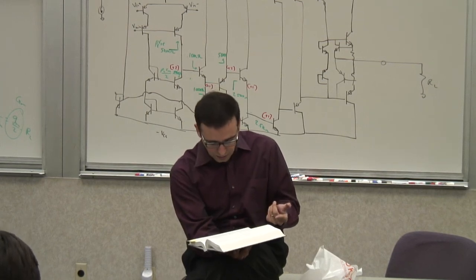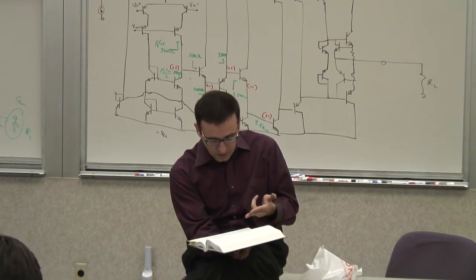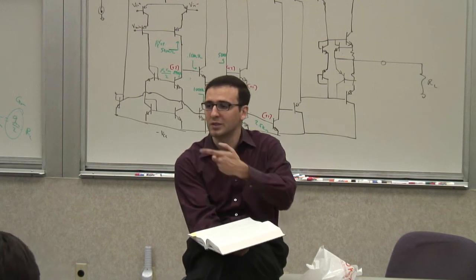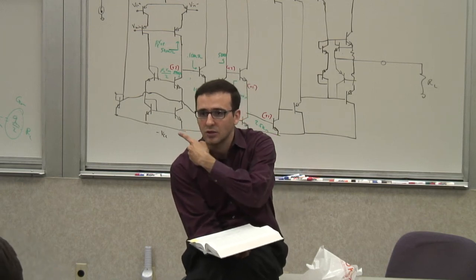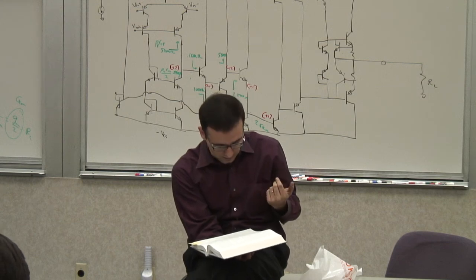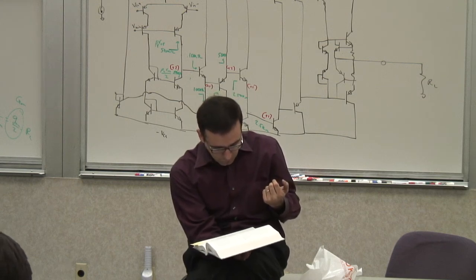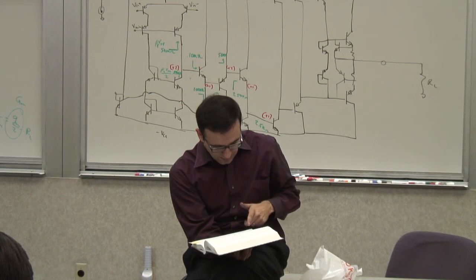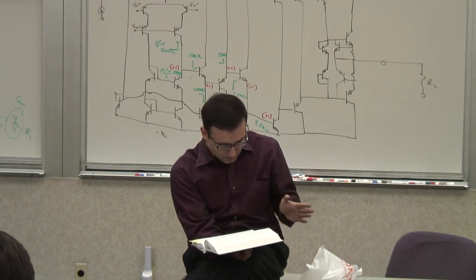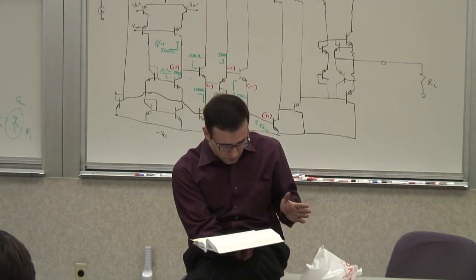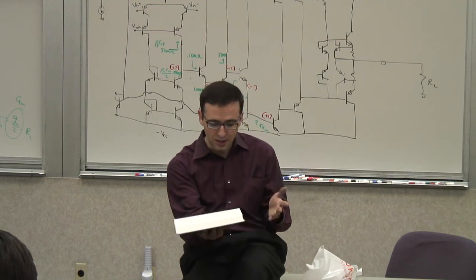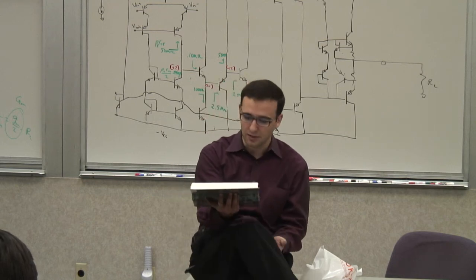Q8 is essentially a diode-connected transistor. It creates a low impedance on that upper node, making it into a common collector. Q11 and Q12 is the reference branch. The current generated in 741 is not temperature-independent — it's not supply-independent. There are two diode-connected transistors Q12 and Q11. The current in that branch is basically VCC plus VEE minus the two VBEs of Q12 and Q11, divided by the 39 kilo ohm.